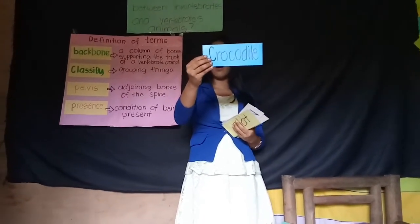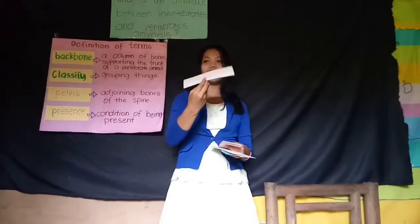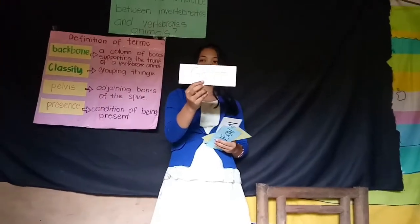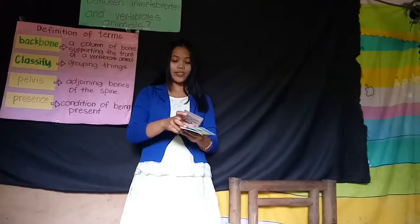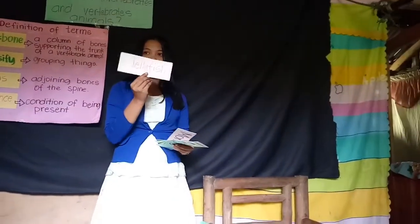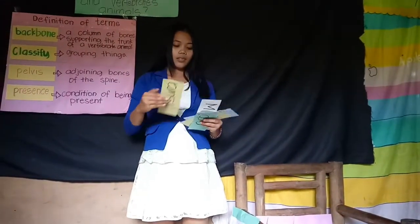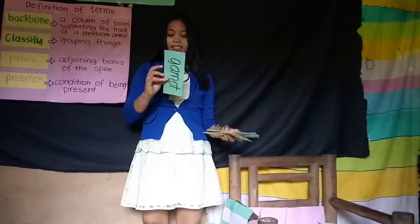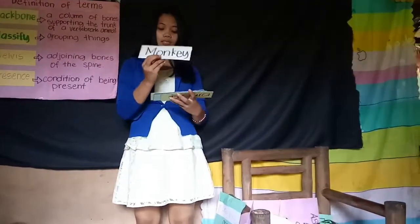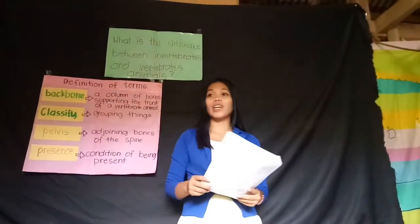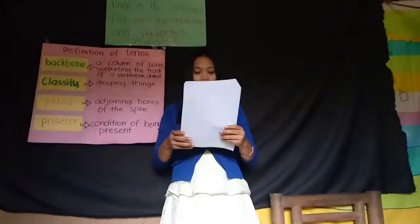Next is crocodile. Where does it belong? Vertebrate. Very good. Next is goat. Where does it belong? Vertebrates, ma'am. Very good. Next is jellyfish. Where does it belong? Invertebrates. And the last one is monkey. Where does it belong? Vertebrates. Very good. Vertebrate animals are animals with a backbone, and invertebrate animals are animals without a backbone.